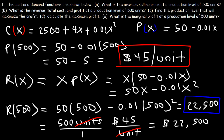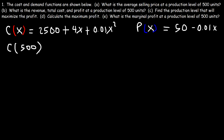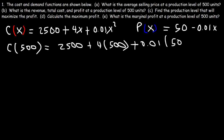We already have the total cost function. Plugging in 500 gives us a cost of $7,000.